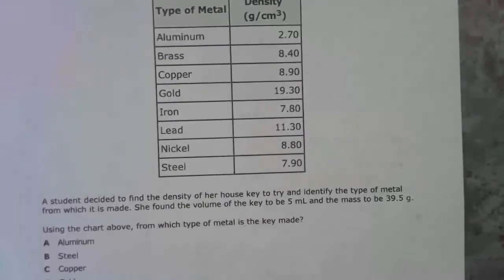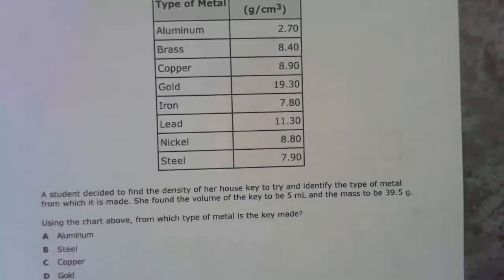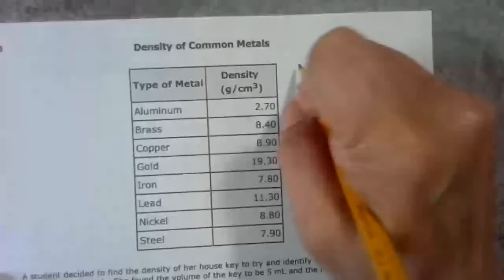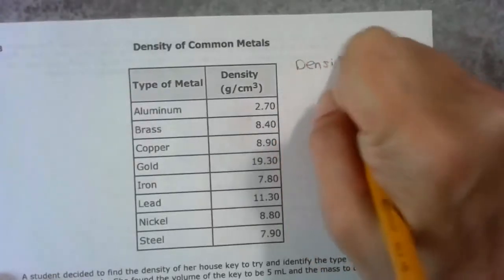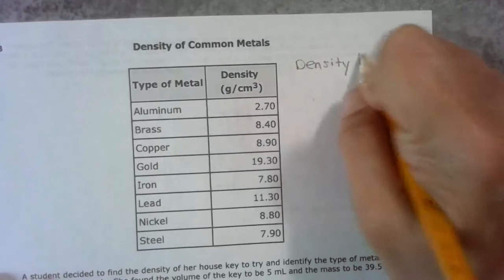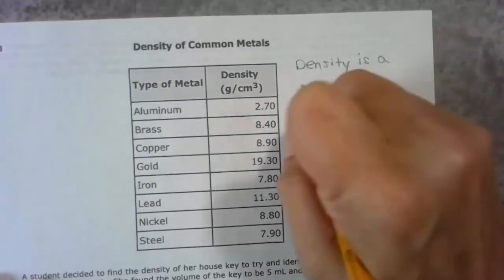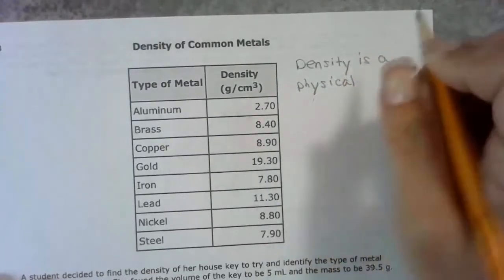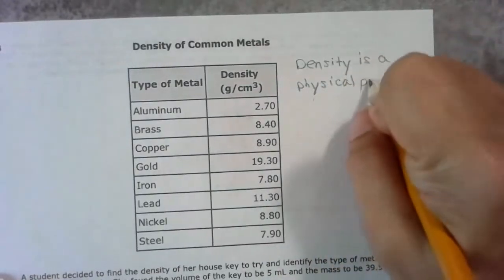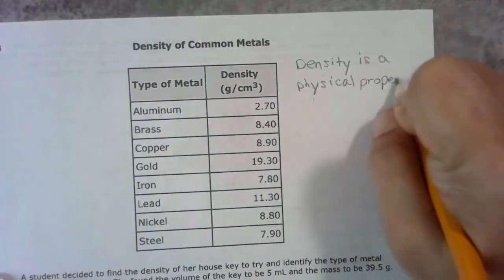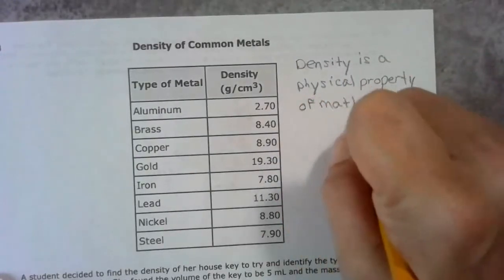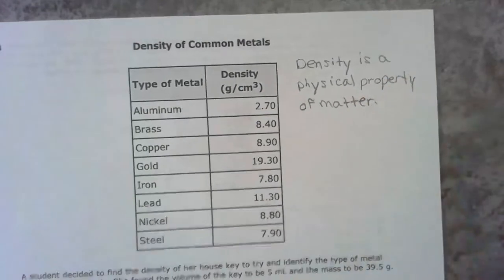A student decided to find the density of her house key to try to identify the type of metal from which it's made. We can do that because density is a physical property of matter. We can identify an object by its density. The density will always be the same for that object.